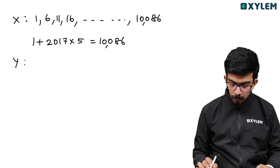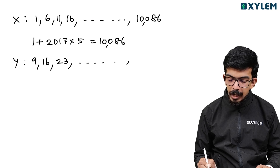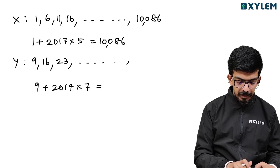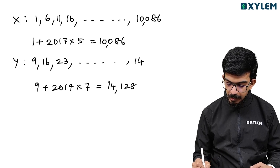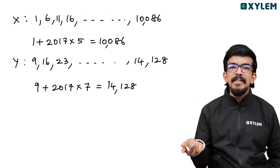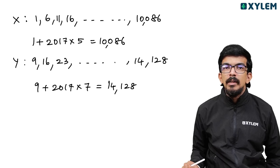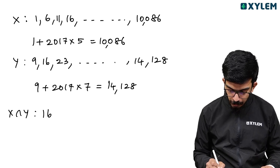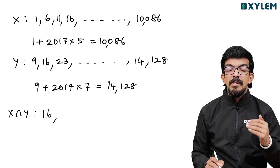For Y: 9, 16, 23 — the last term is 14128. Now to find |X∪Y|, we need |X|, |Y|, and |X∩Y|. The common terms will come from the intersection. X has common difference 5, Y has common difference 7, so the common difference of X∩Y is LCM(5,7) = 35.